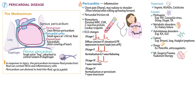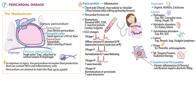Some causes are associated with specific types of pericarditis — for example, some bacteria can cause purulent pericarditis. Constrictive pericarditis can occur when chronic inflammation leads to fibrosis or calcification of the pericardium, producing a tough, inelastic shell around the heart that impairs diastolic filling. This impaired diastolic filling can lead to peripheral venous congestion and Kussmaul sign, which is characterized by increased jugular venous pressure during inspiration.